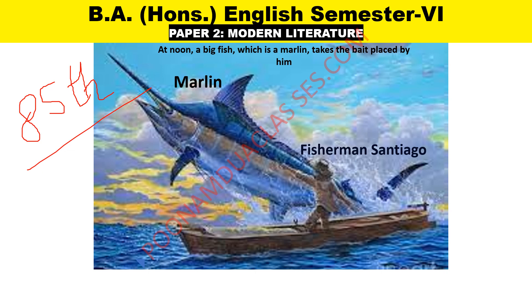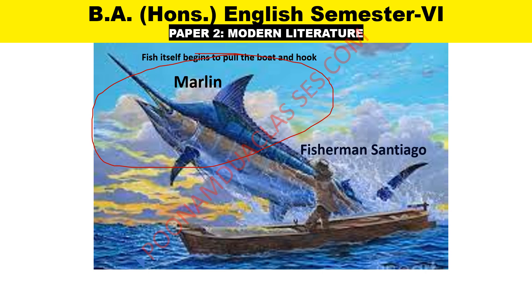On the 85th day, Santiago does as he promised — he sails his boat far beyond the shallow coastal areas, into the deep Gulf waters. He prepares his lines and all the preparations to catch the fish. A Marlin gets on the line, but that Marlin was so huge, beyond the expectations of Santiago. He expertly hooks the fish but is unable to pull it because the fish is very heavy. The fish itself begins to pull the boat with the old man.